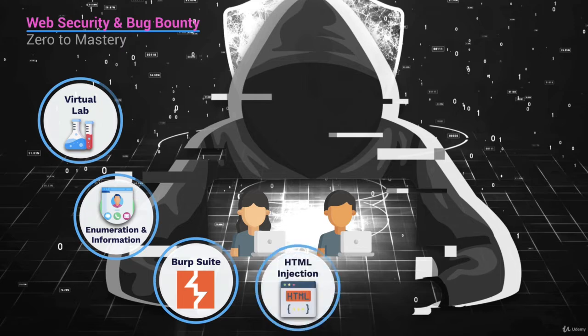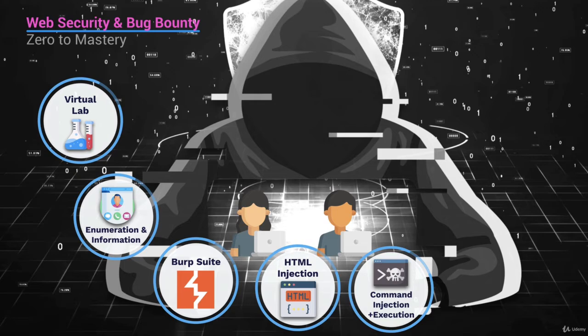We then get into our first bug — HTML injection. It's one of the easier bugs to find and use, so this is where we start. But then we get into more complex topics. For example, we're going to talk about command injection and execution. This is an extremely dangerous bug where we can inject commands through an input and affect a server or a system.